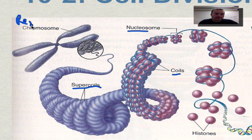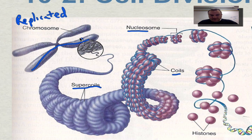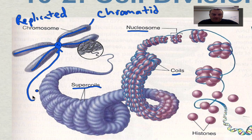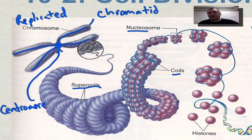This is called a replicated chromosome because it's already gone through DNA replication. It has an X shape — one side of the X is one copy and the other side is another copy. Each side of the X is called a chromatid, and the little spot that holds the two chromatids together is called a centromere. We'll go over this in more detail shortly.